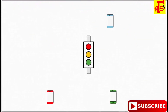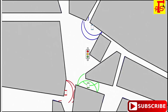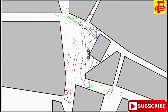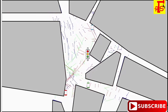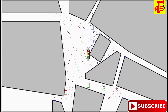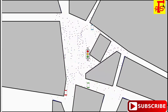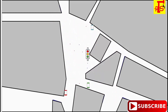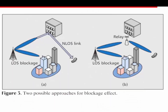A possible approach to solving the blockage effect is through higher-density infrastructure and relays. A relay works like a repeater. Base stations and relays are densely deployed in outdoor urban areas for millimeter wave communications. When a transmitter sends a beam toward a destination user but it is blocked by a cluster of buildings, the macro cell will look for a nearby base station or small cell that has a line-of-sight link with the destination user, and then transmit the beam through that relay.